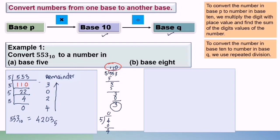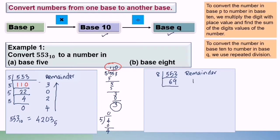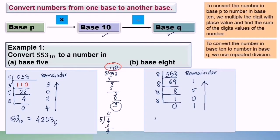Now we want to convert 553 base 10 to a number in base 8. To convert base 10 to base 8, the number is divided by 8. 553 divided by 8 gives 69 remainder 1. 69 divided by 8 gives 8 remainder 5. 8 divided by 8 gives 1 remainder 0. 1 divided by 8 gives 0 remainder 1. Reading from bottom to top: 553 base 10 equals 1051 base 8.